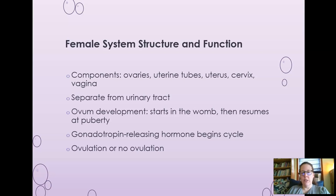When she reaches puberty, when egg development starts again, she's actually down to about 400,000 eggs. Then she will actually only release anywhere between 400 and 500 eggs, depending on how many cycles she has — that's the average number of periods a woman would have during her reproductive years.